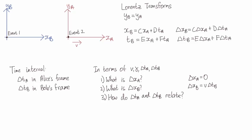Lastly, how do delta t_a and delta t_b relate? So either delta t_a equals gamma delta t_b, or delta t_b equals gamma delta t_a.